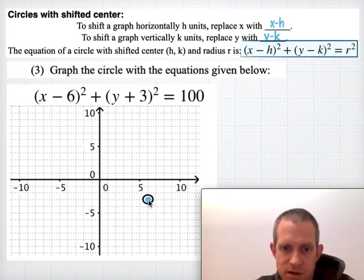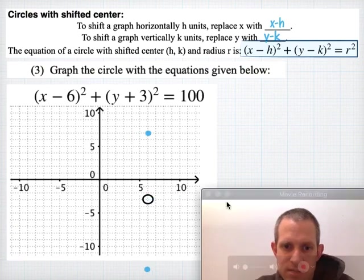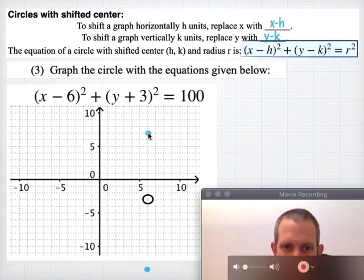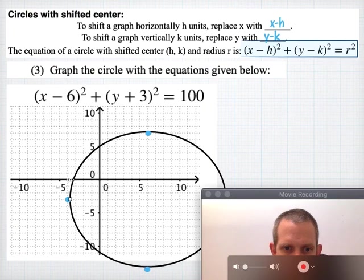I'm going to try to find some points that are 10 above. 10 above -3 would be 7, so about here, and 10 below is off the graph. 10 to the right would be 6 plus 10, that's 16, and 10 to the left would be 6 minus 10 is -4, so that would be about here. I can do my best to draw the circle through those points.